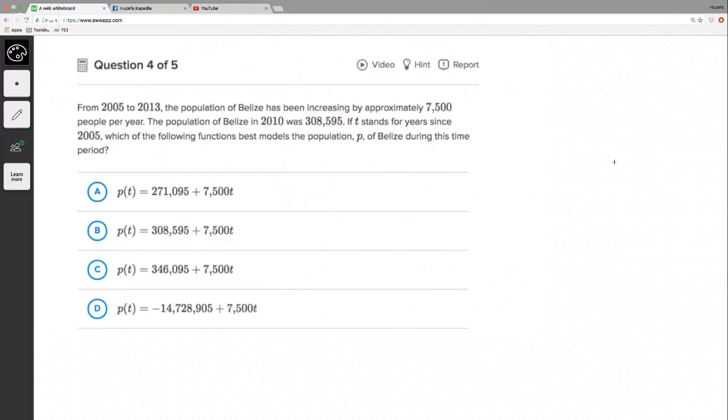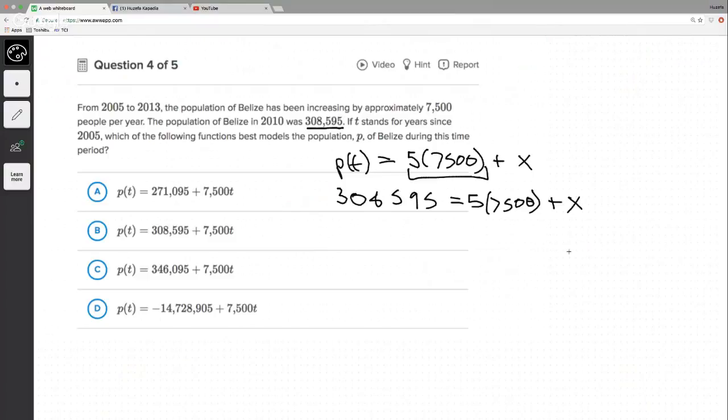All right. From 2005 to 2013, the population of Belize, 7,500 people per year. Population of Belize in 2010 was 308... T stands for years since 2005, best model of the population of Belize during this time period. So we can kind of think about it like this, this is after five years, right? So P of T equals, so it'd be one, two, three, four, five times 7,500 plus X. And then this would be... I can't really explain everything because of my voice, but basically, I'm making the population of 2010 equal to this, because this is five years out, right? So it must have increased by 7,500 plus whatever the baseline is, and this value is the population of 2005.